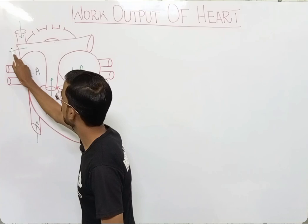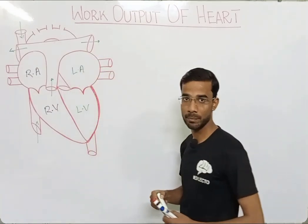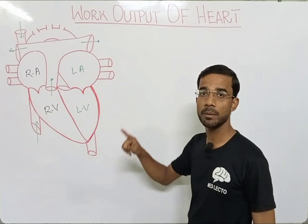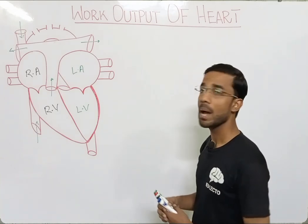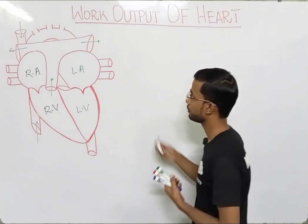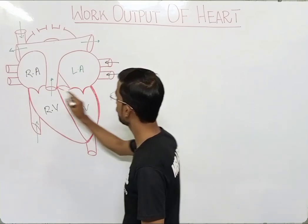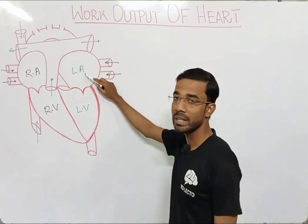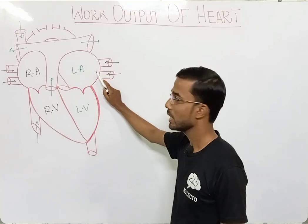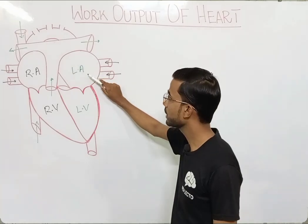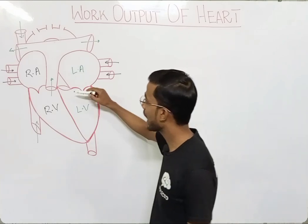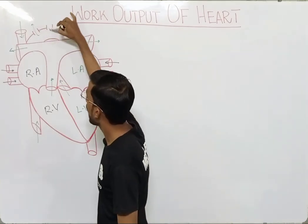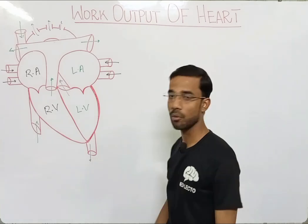The blood exits from the pulmonary trunk and goes to the lungs. From the lungs, after oxygenation, the blood re-enters the heart through the pulmonary veins — basically four pulmonary veins. The blood then enters the left atrium, goes to the left ventricle, and after that goes to the aorta, which distributes it to the upper and lower parts of the body.